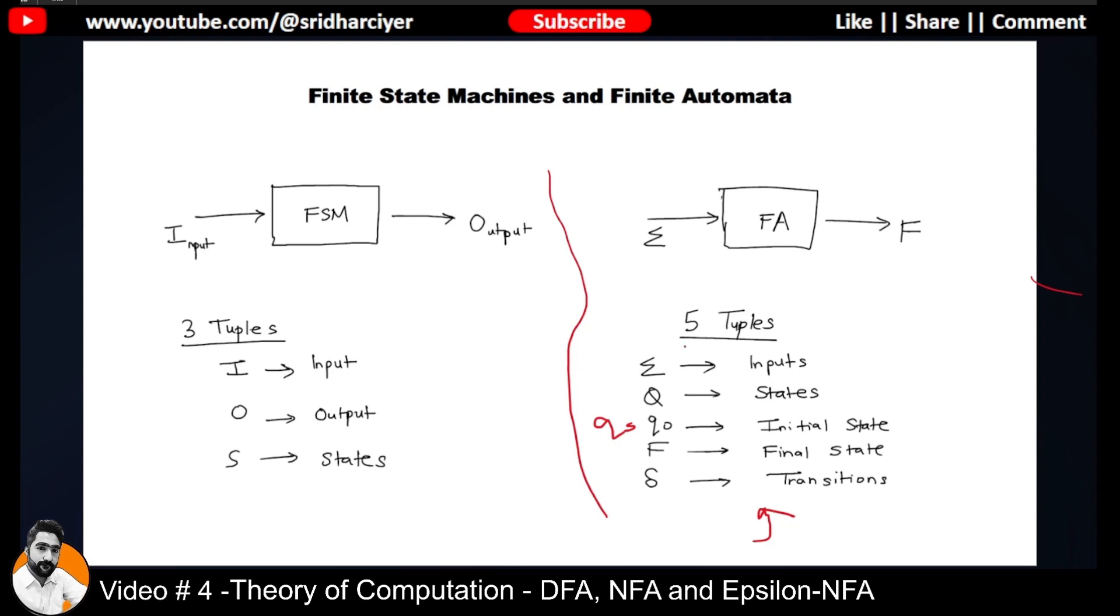So that is what FSM is and how it gave rise to FA. Because if you compare it, they are more or less the same. FSM has a tuple called I for inputs, whereas FA consists of this sigma symbol for inputs. So they are equivalent. Similarly, FSM has this particular S symbol for states, whereas FA consists of this Q symbol for finite set of states. So again, they are the same.